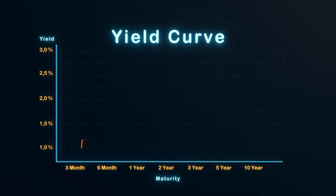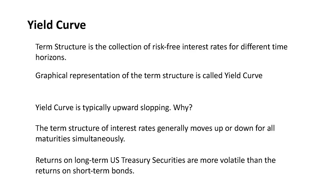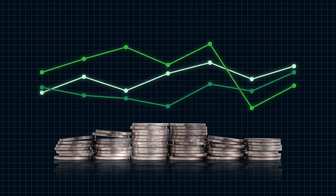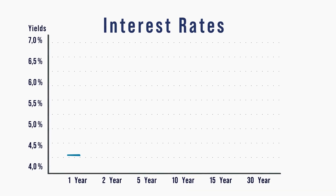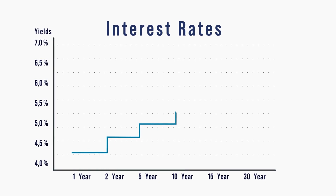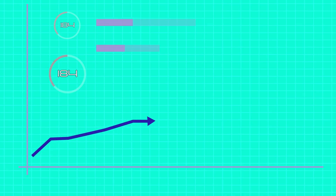In this video, I am going to talk about the term structure of interest rates and the yield curve. The term structure is a collection of risk-free interest rates for different time horizons — for example, interest rates for 1 year, 2 years, 3 years, 10 years, and 30 years. The collection of these interest rates is called the term structure. A graphical representation of the term structure is called the yield curve, where the y-axis shows interest rates and the x-axis shows the time horizon.